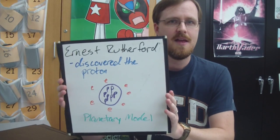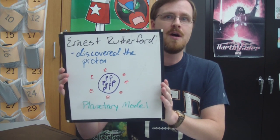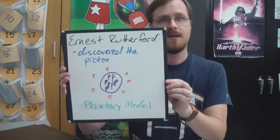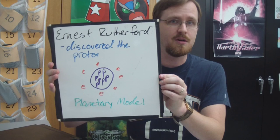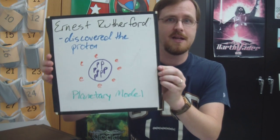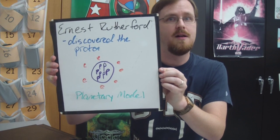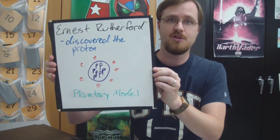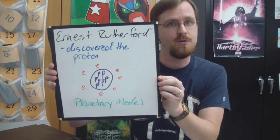That was so surprising to Rutherford. So after a lot more observations and calculations, he realized that the atom had a positive particle in the center called the proton. So he rearranged the atomic model to have the protons in the center, which he called the nucleus, and the electrons on the outside. He called his model the planetary model, because just like planets orbiting around the sun, the electrons were orbiting around the nucleus.